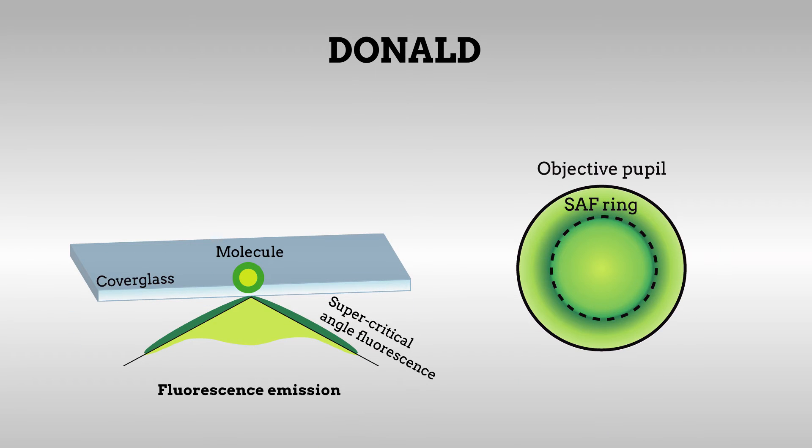DONALD differs from D-STORM in that it also incorporates information obtained from supercritical light, whose collection strongly depends on the axial position of the molecule relative to the cover glass surface. This additional information increases the axial resolution and allows the absolute position to be determined, not just its location relative to another molecule.